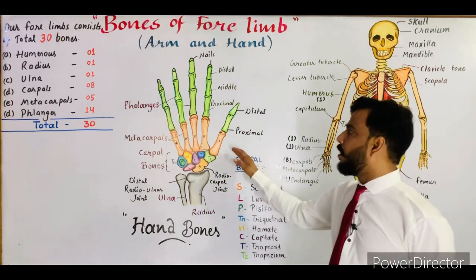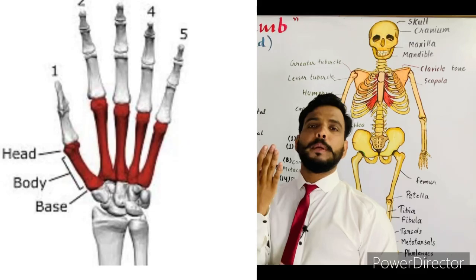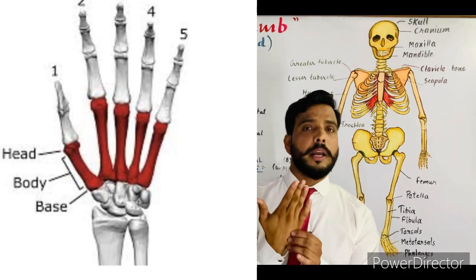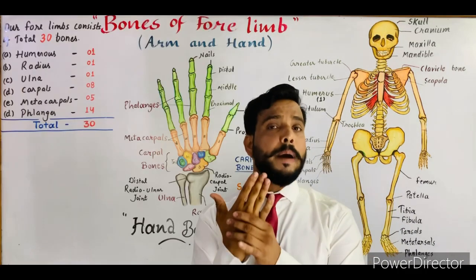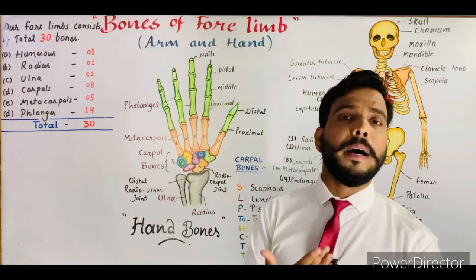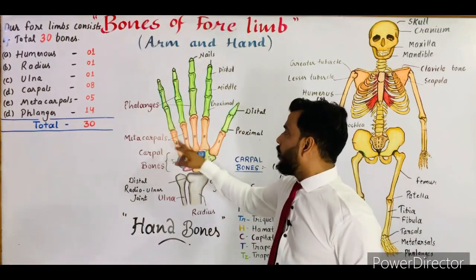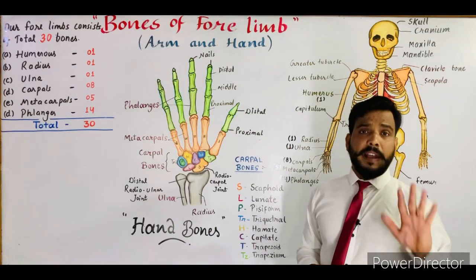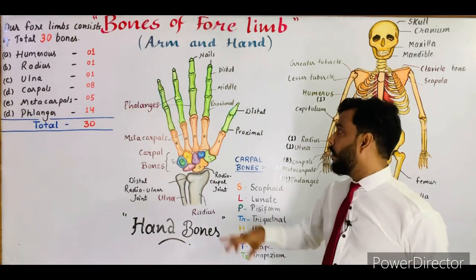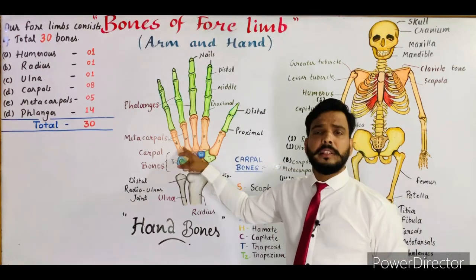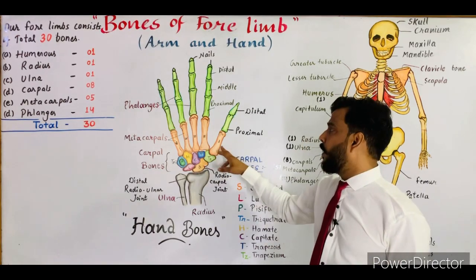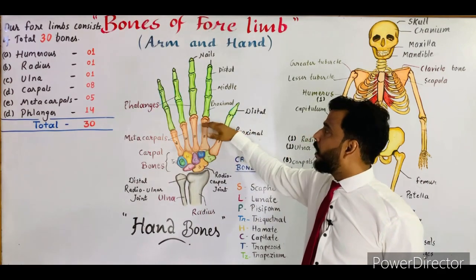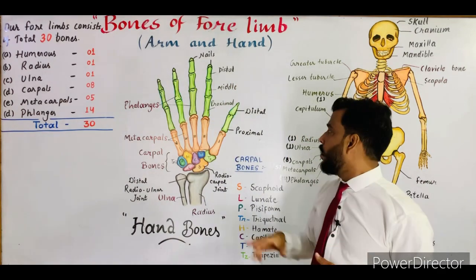Now we will talk about the metacarpals. The metacarpal bones are five in number and are present in our palm region — they are the palm bones. There are five metacarpals in each hand, denoted with Roman numerals one through five. These metacarpals are attached with the phalanges bones.